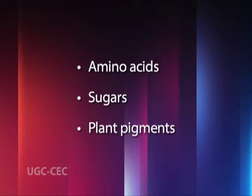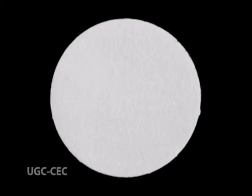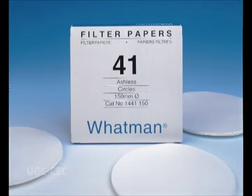Paper chromatography is an example of partition chromatography. It has been generally used for separation of amino acids, sugars, and plant pigments. Paper chromatography is a method of separating mixtures using a piece of good quality filter paper, for example Whatman filter paper. It is considered to be the simplest and most widely used of the chromatography techniques because of its applicability to isolation, identification, and quantitative determination of biomolecules.